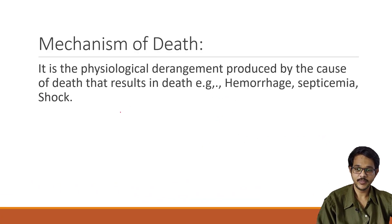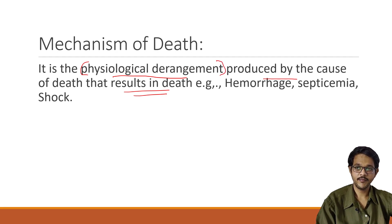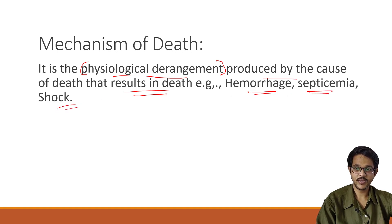Next, coming to mechanism of death. Mechanism of death is the physiological derangement produced by the cause of death which results in death. Any cause of death which causes some derangement in the body is the mechanism. For example, hemorrhage, septicemia, shock — these are all mechanisms of death which lead from the cause of death to the final event.